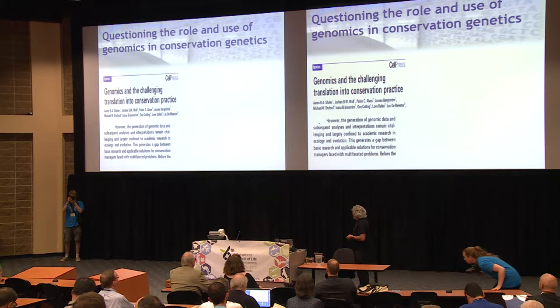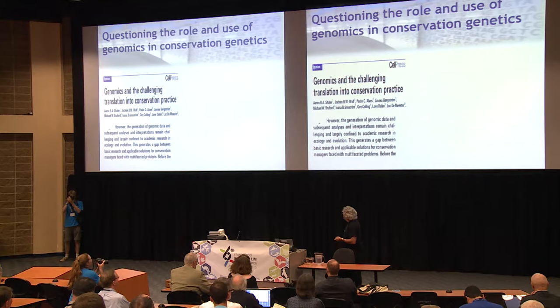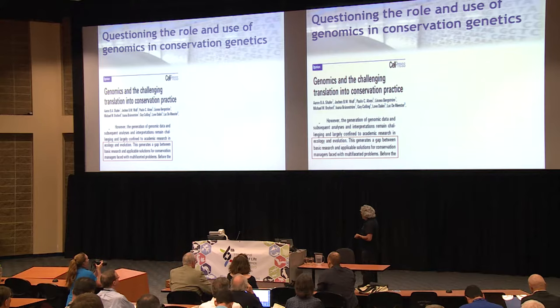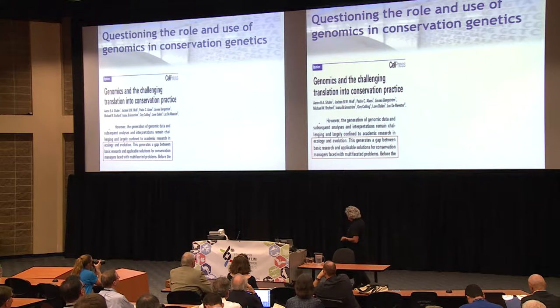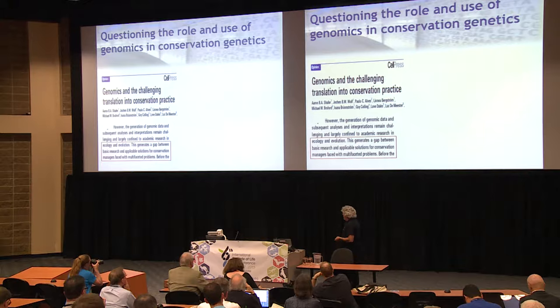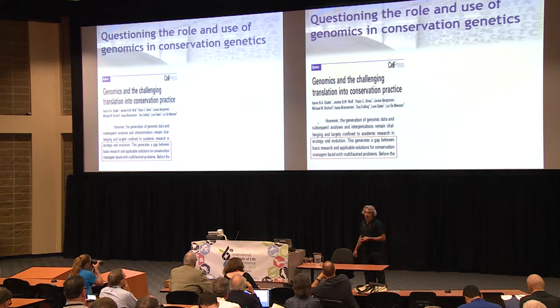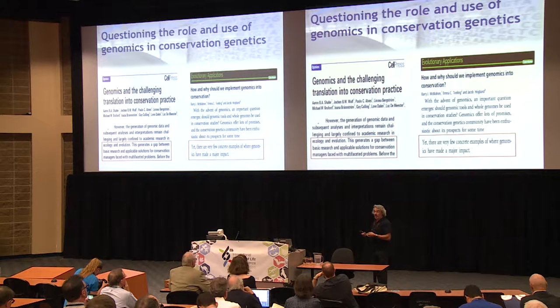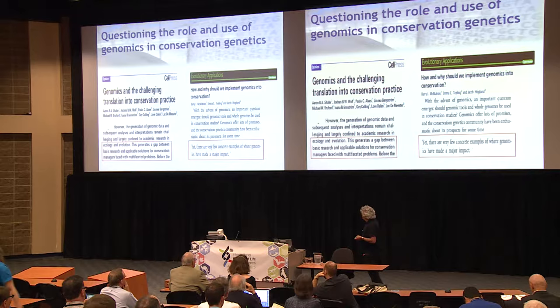So despite this huge potential offered by new genomics, there are currently concerns about how really applicable these tools are in practical terms for conservation. That's highlighted in this recent opinion in Trends, authored by Aaron Schafer and 35 co-authors, basically expressing concern that there's a serious gap between basic research being done in genomics and applicable solutions for conservation managers faced with multifaceted problems. The same kind of opinion has been expressed recently by the Hoban group, saying that despite this potential, there are very few concrete examples where genomics have made a major impact.